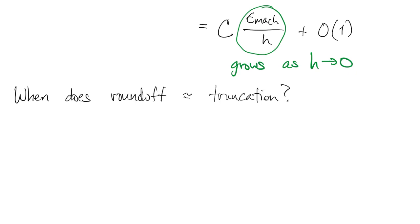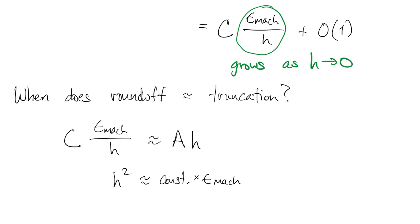That's when the rounding error is roughly the same as the truncation error. This means that h is on the order of the square root of machine epsilon. I'll call this h-opt because it suggests the h that gives optimal accuracy.